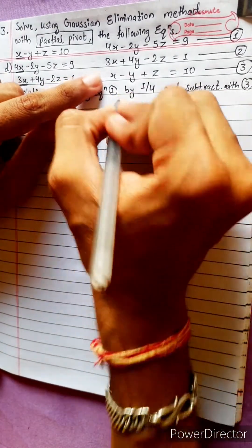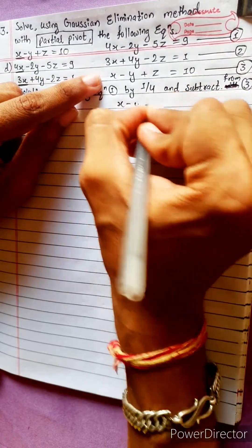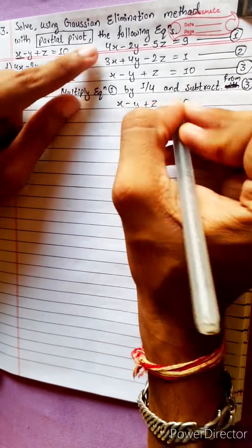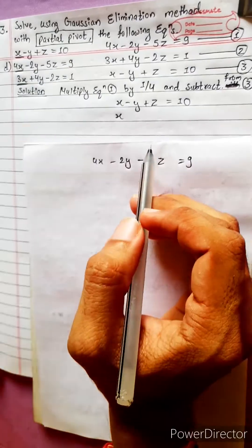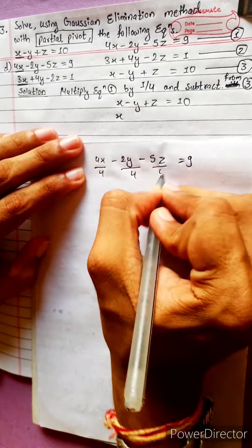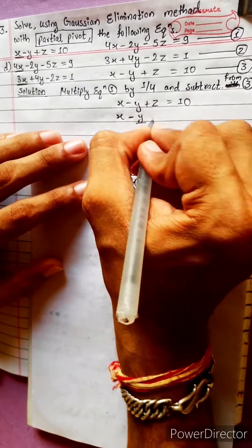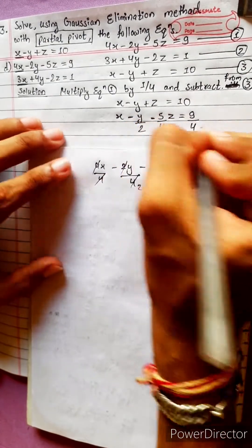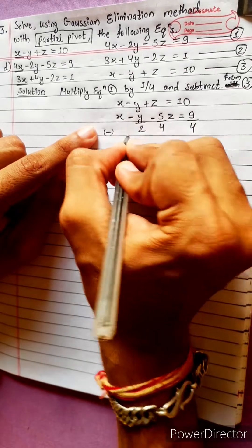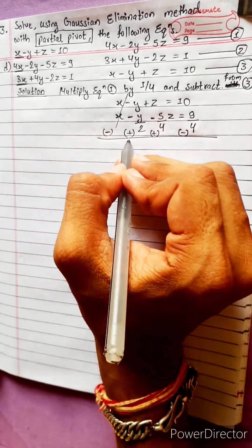Write Equation 3 as it is: x minus y plus z equals 10. Now multiply Equation 1 by 1/4 — that means divide every term by 4. We get x, minus 2/4 y, minus 5/4 z, equals 9/4. Now subtract: x cancels out.